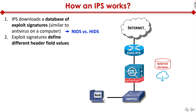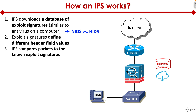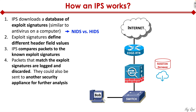IPS is a Network-Based Intrusion Detection System, whereas antivirus on your computer is considered a Host-Based Intrusion Detection System, or HIDS. The second thing that IPS does is exploit signatures define different header field values. Packets have headers at layer 3 and layer 4, and IPS looks at the exploit signatures and compares them against those header fields, looking for anomalous behavior. Packets that match those signatures are logged and discarded.